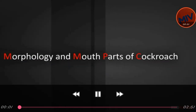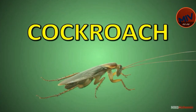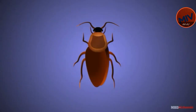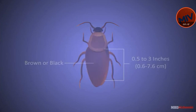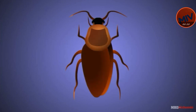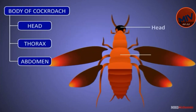Morphology and Mouthparts of Cockroach. Cockroach is a terrestrial, nocturnal, cursorial, omnivorous and cosmopolitan insect. Its body is dark brown in color. The body is divided into three regions: head, thorax and abdomen.